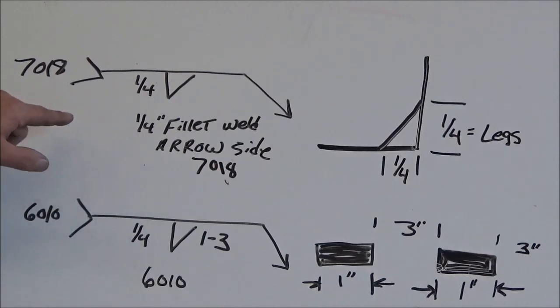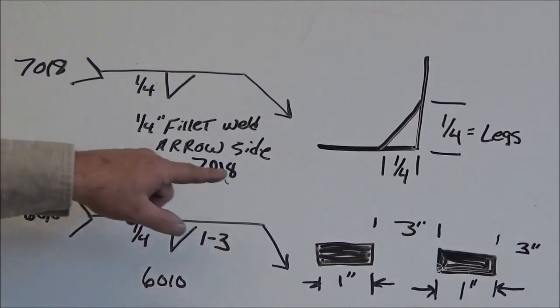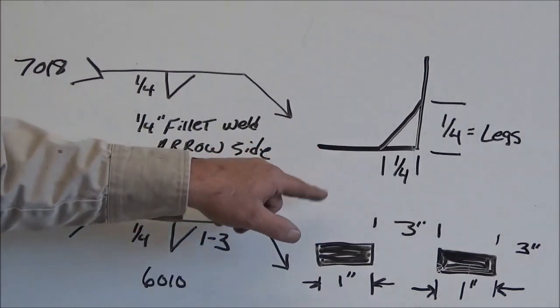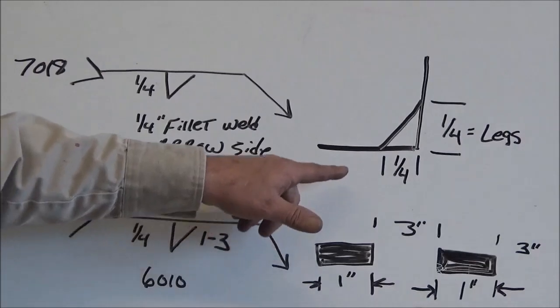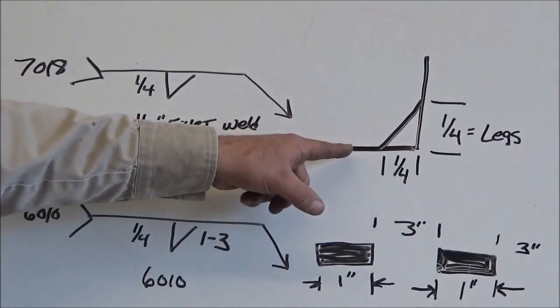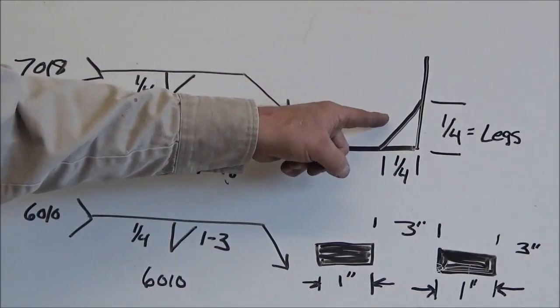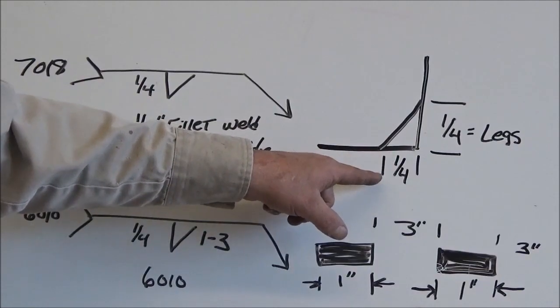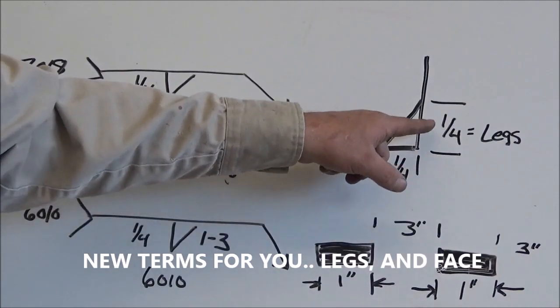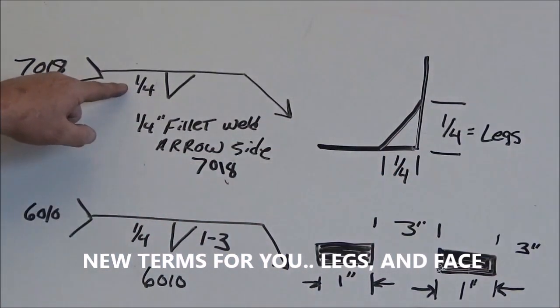And when we look in the tail here, we can see the number 7018. That tells us the electrode that they want us to use or the filler material. Now, let's take a look over here. Here is how you measure a fillet weld. These are known as legs. This is known as the face. So you want to have equal legs of one quarter inch for this particular weld symbol.